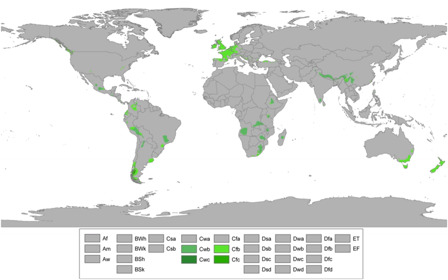Within Japan, the port city of Muroran is the only part of Hokkaido with an oceanic climate. Parts of the northeastern coast of Honshu, from Mutsu, Aomori towards Miyako, Iwate, also feature this climate.